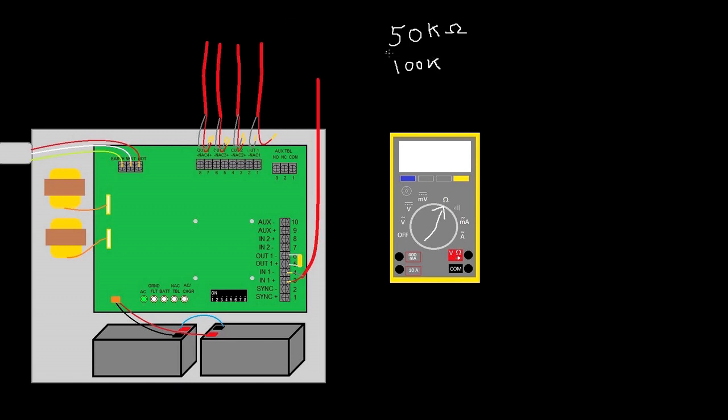Now the closer that is to a meg, the less true that probably is. If you had 900K, your panel may not go into ground fault, but you could probably find it and fix the problem. There's probably something going on there.